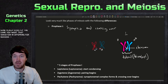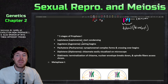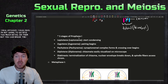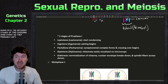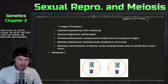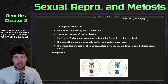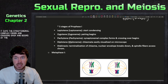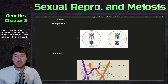Prophase one is also broken up into different sub-phases. They're called leptotene, zygotene, pachytene, diplotene, and diakinesis — it just depends on what you can see during which part of the event. The synaptonemal complex forms and crossing over begins at the pachytene stage.